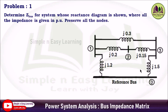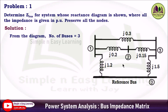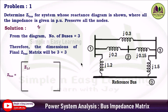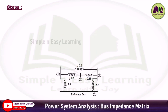All the impedances are given in per unit. From the diagram it is clear that the number of buses is equal to 3. Except the reference bus, the remaining number of buses equals 3, therefore the dimension of the final Z-bus matrix will be a 3×3 matrix, which consists of nine parameters.